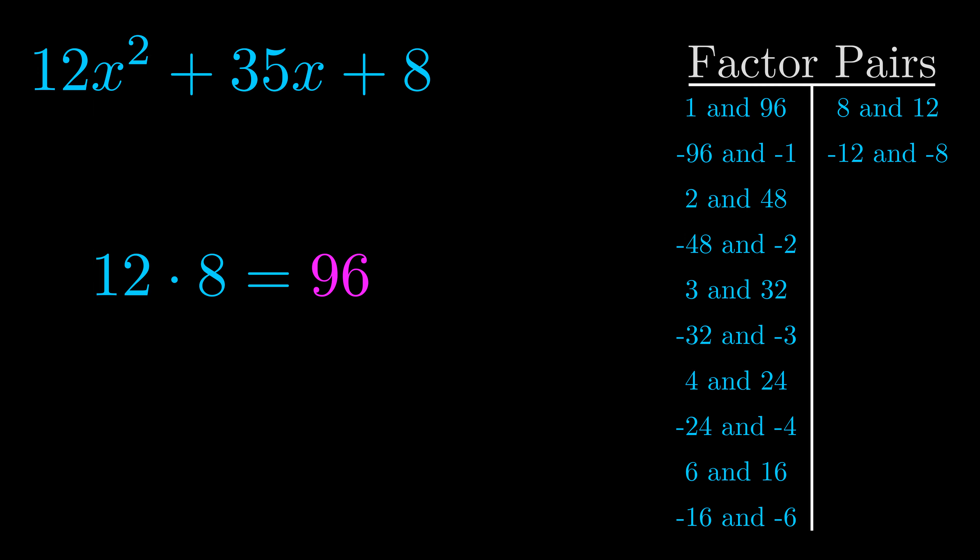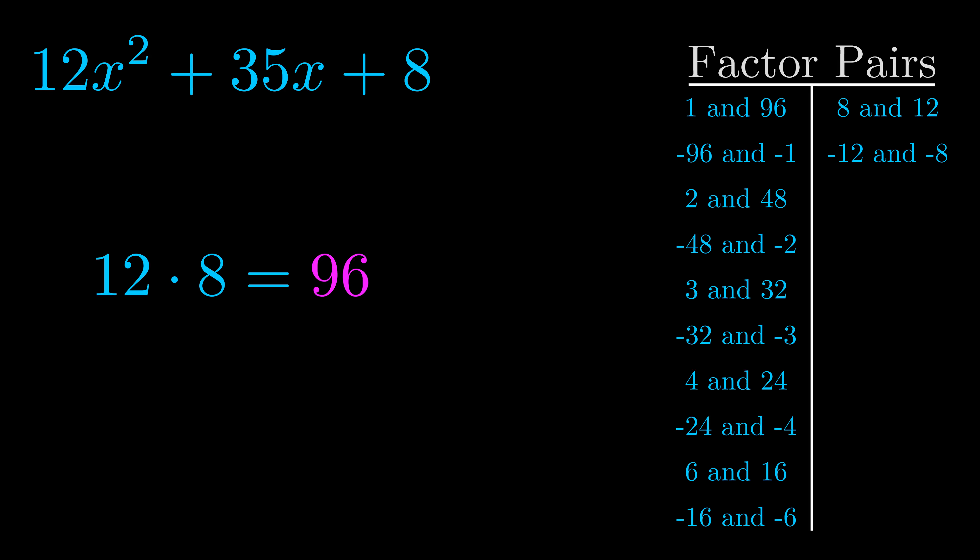Now once you have these factor pairs the goal is to find which of these pairs adds to the b value. The b value is the coefficient on the x term. That's the middle term, the one that we haven't done anything with yet. And really this is the only factor pair that we need.